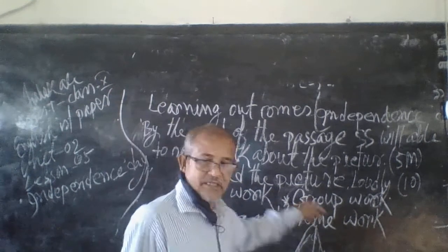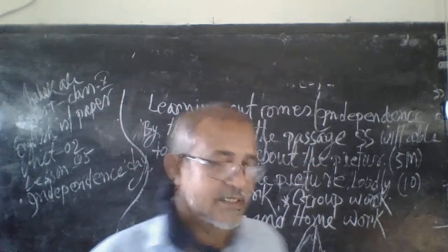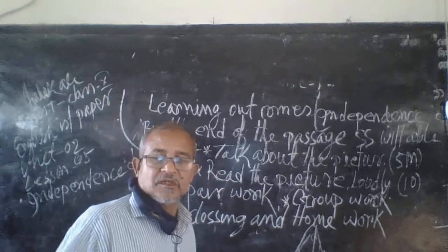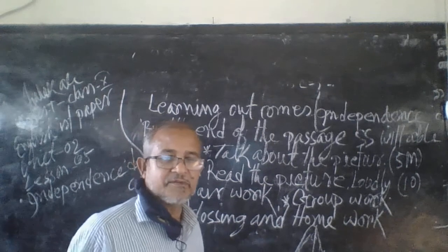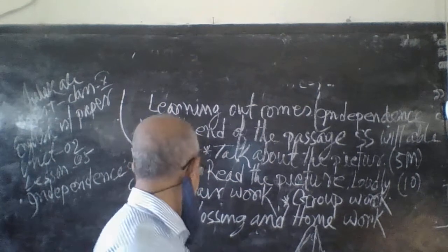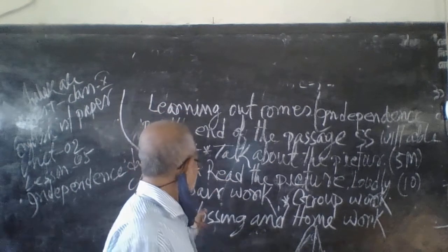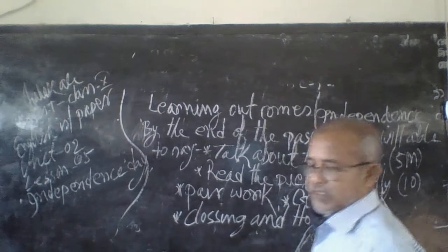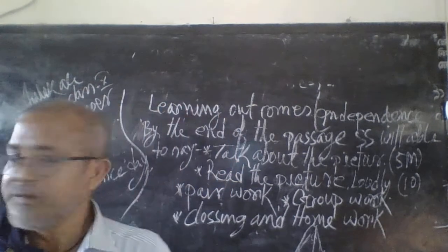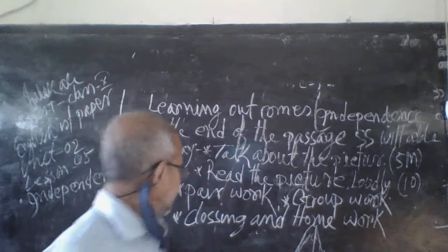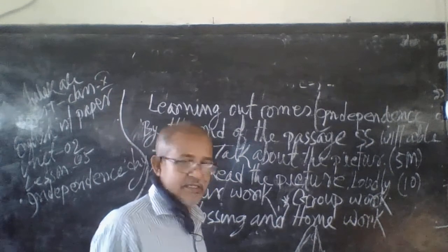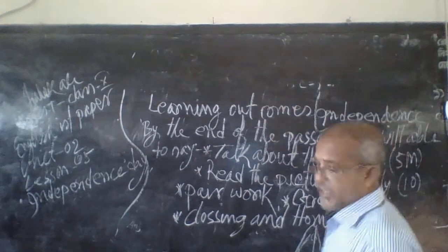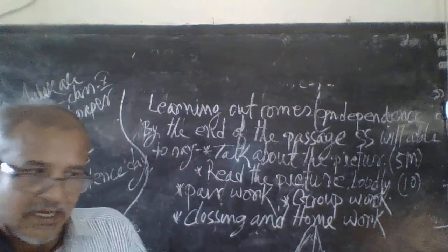Read the passage loudly. Find out and try talking about it with your partner by pair work. You and your partner, in this way. Next, do group work — after grouping, one bench is one group. Read the passage loudly and try to understand the answers to the questions. After 10 minutes, discuss among yourselves.